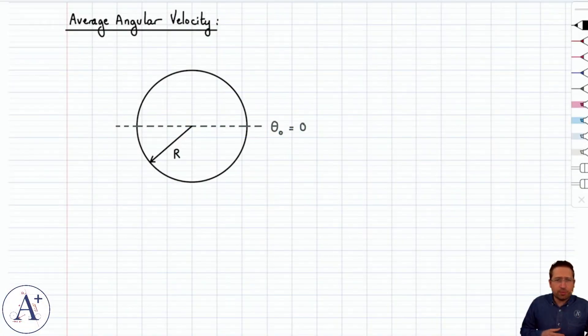Now that we've defined the angular position and the angular displacement, let's look at the average angular velocity, which is going to represent, on average, how many radians the particle sweeps through per second. So it's going to be the same idea as the average velocity vector.